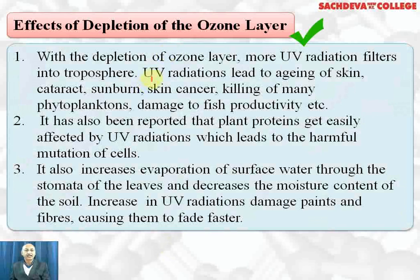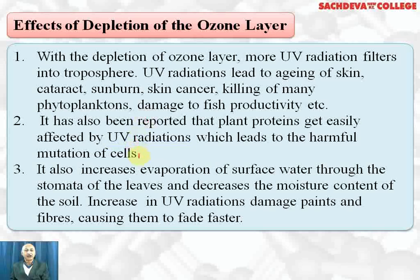Effects of depletion of the ozone layer: it may lead to aging of skin, cataracts, sunburns, skin cancer, killing of many phytoplanktons, and damage to fish productivity, because more ultraviolet rays will reach the earth. It has been reported that plant proteins are easily affected by UV radiation, which leads to harmful mutation of cells. UV radiation also increases evaporation of surface water through the stomata of leaves and decreases moisture content of the soil. Increased ultraviolet radiation also damages paints and fibers, causing them to fade faster.